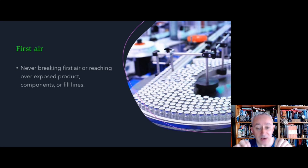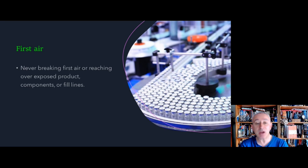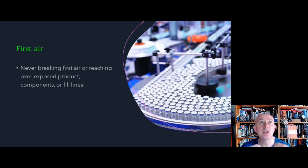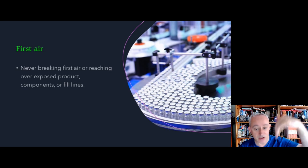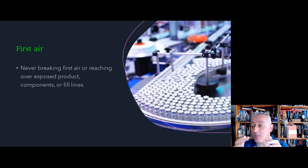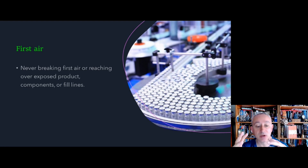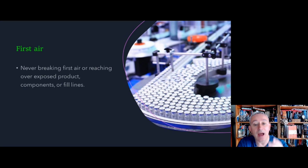First air is the principle of never breaking first air or reaching over exposed product components or the filling line. This is because first air is the last defense against contamination getting into the vial. First air is defined as the undisturbed air coming directly from HEPA filtration sources like unidirectional airflow. It's important to understand that many things can disrupt first air, and we need to avoid the airflow from becoming blocked or from things that might generate particulates due to their design, or anything that would create undue turbulence.